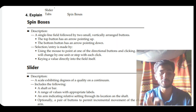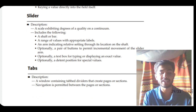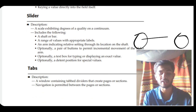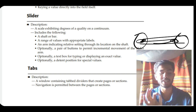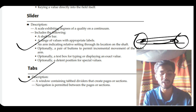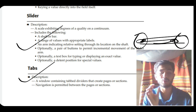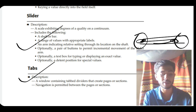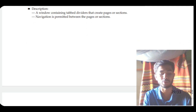A slider has a range with a ball you drag to set the desired value within that range. The last control here is tabs: tabs show separate sections or pages, indicating which page is present in which part of the interface. More detailed information can be referenced from the theory material.